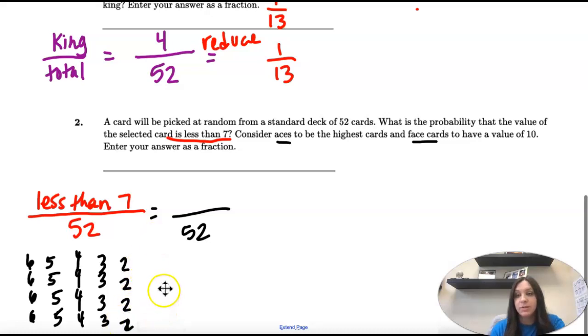There's not a one in cards and the ace is high, so we have one, two, three, four, five, five, four, four. So that's 20 cards.